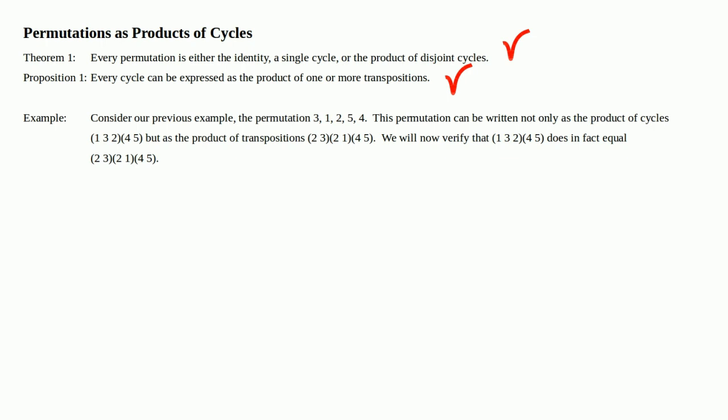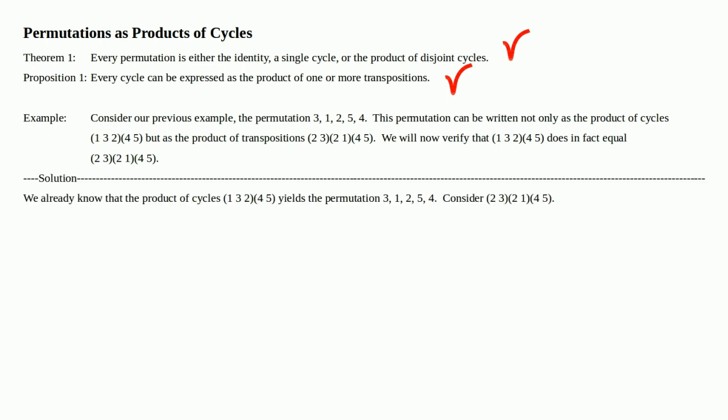We will now verify that the product of cycles (1, 3, 2) times (4, 5) does in fact equal the product of transpositions (2, 3) times (2, 1) times (4, 5). We already know that the product of cycles (1, 3, 2) times (4, 5) yields the permutation (3, 1, 2, 5, 4). If you don't, go ahead and pause the video and verify that fact right now. Now consider the product of transpositions (2, 3) times (2, 1) times (4, 5).